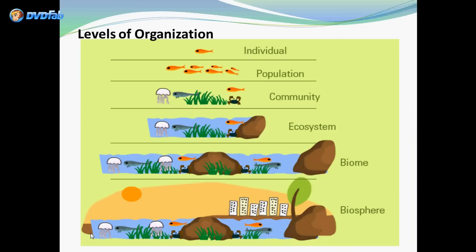We'll also be covering the levels of organization. As you can see here, it looks like a pyramid starting with an individual and moving all the way up to a biosphere. Individuals make up populations, populations make up communities, communities make up ecosystems, ecosystems make up biomes, and biomes make up the biosphere.